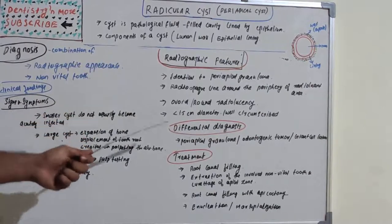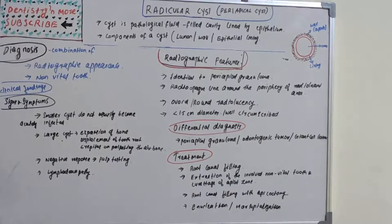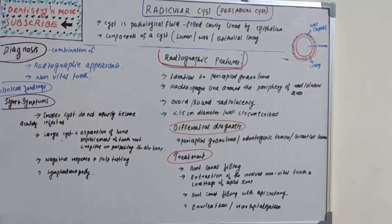Differential diagnosis includes periapical granuloma, odontogenic tumors, and giant cell lesions. Treatment options include root canal filling, extraction of a non-vital tooth with curettage of the apical zone, or root canal filling with apicoectomy. If not properly treated, there is a chance of residual cyst formation. In severe conditions, enucleation or marsupialization is required. Radicular cyst is one of the most common jaw cysts.